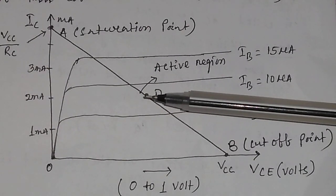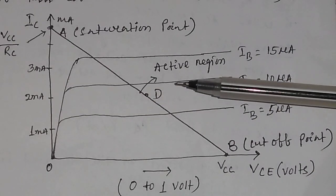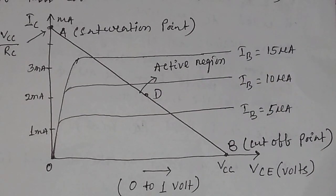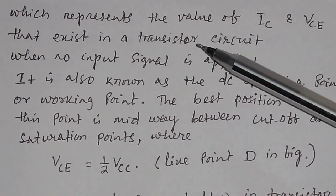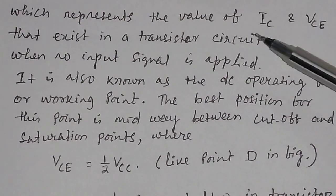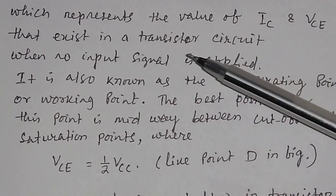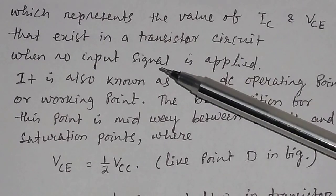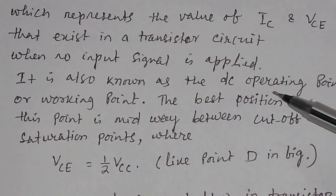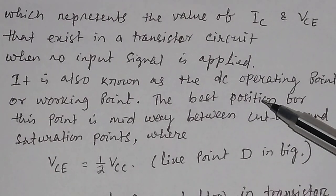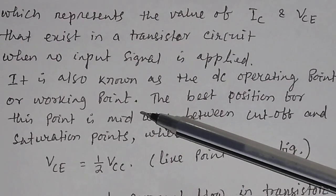While finding out the Q point, you should not have any signal in the circuit — no AC signal is applied. So the Q point is a point on the DC load line which represents the value of IC and VCE that exist in a transistor circuit with no input signal applied. It is also known as the DC operating point, or it is also called the working point.